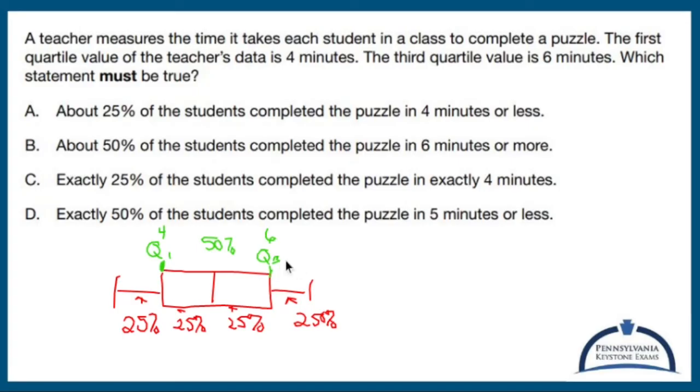So anything below four is 25%, everything in between one and three is 50%, and everything bigger than six is 25%. So let's see what they want. About 25% of the students completed the puzzle in four minutes or less. That's actually true. So yeah.